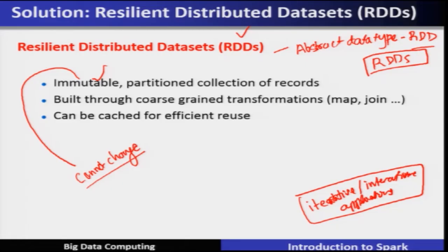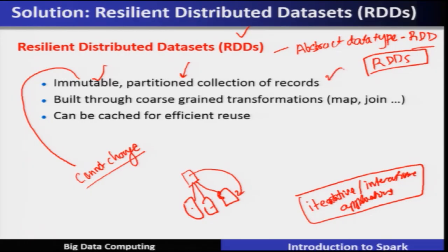Once an RDD is formed it will be immutable. This immutable resilient distributed data set can be partitioned in various ways across different cluster nodes — it is a partitioned collection of records. RDDs can be partitioned and stored at different places. RDDs are built through coarse-grained transformations such as map, join, and so on, and these RDDs can be cached for efficient reuse.